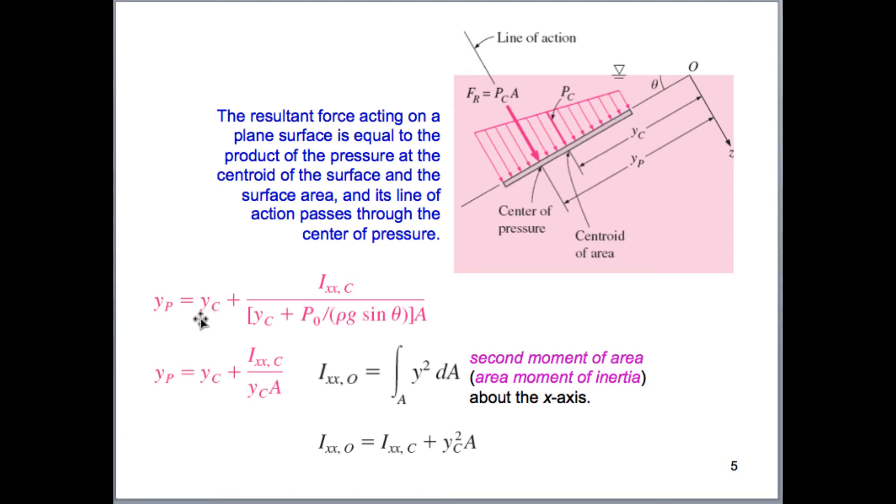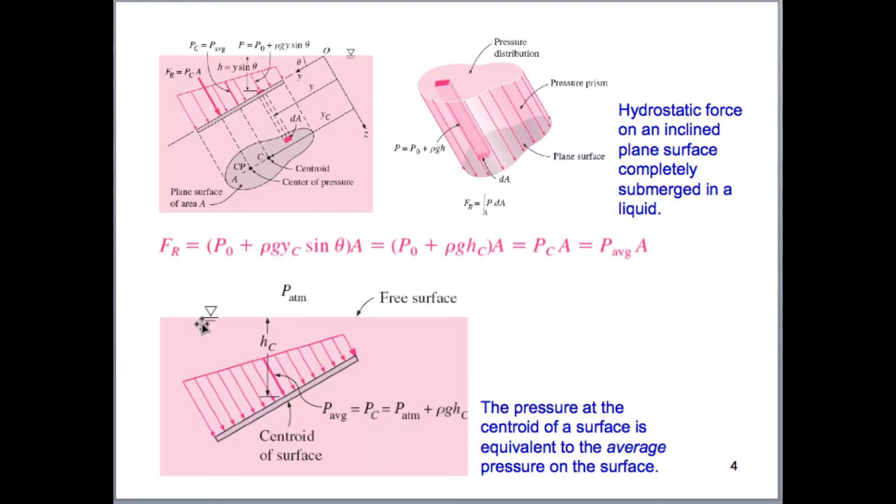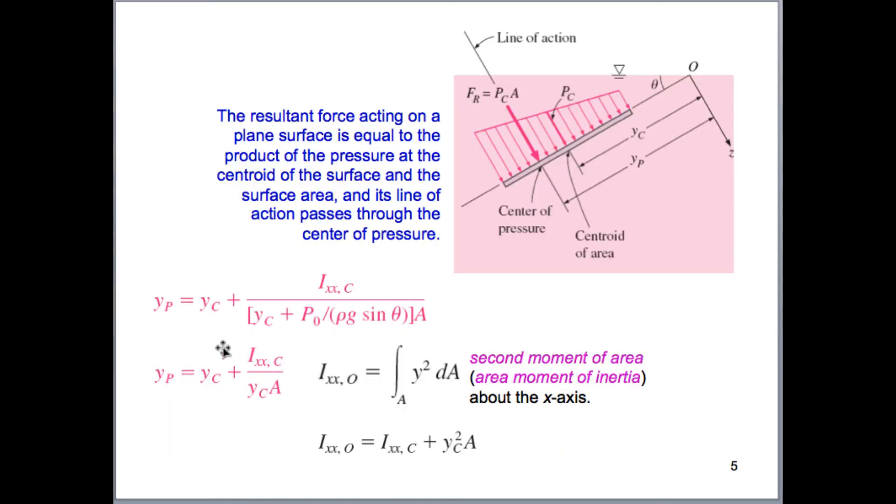So the location of the center of pressure, once we know the magnitude, we find the location, which is called y sub p. If we know that, then we can design our gate. Right? Because this is causing a moment to occur about some hinge, or this is causing some force to act across a certain distance. So we can design our gates, we can design our system to be able to withstand this force that is being caused by this weight of the water on one side of it.